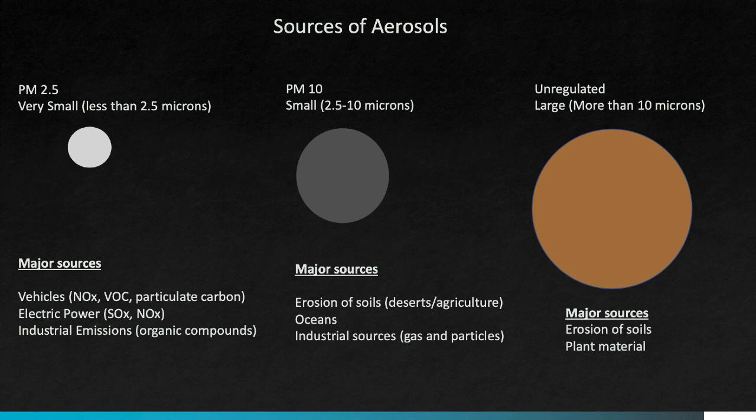The PM10 sources include the erosion of soils from deserts or from agricultural systems. They also include emissions of sea salts from aerosols formed over the oceans or when waves break, and also from some industrial sources that release gas or particles that become aerosols in the atmosphere. The larger unregulated class is mostly the result of soil erosion or from the release of plant materials like pollens into the atmosphere.